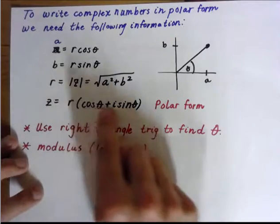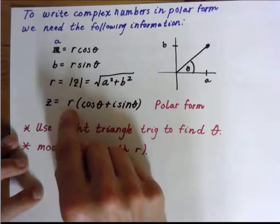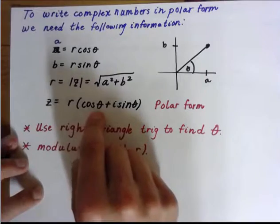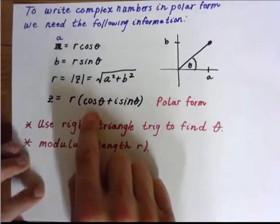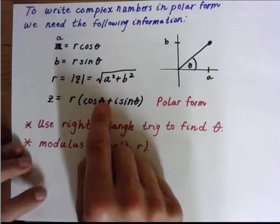So here's the polar form right here. It's just going to equal to R times the quantity cosine theta plus I times sine theta. So the things that we need to make sure we have are R and theta for this.